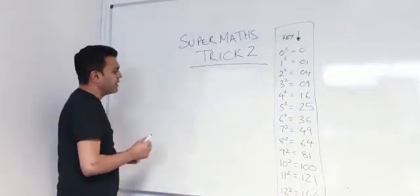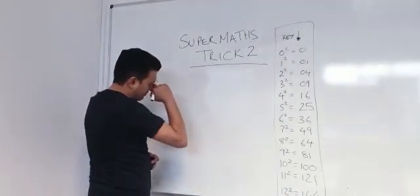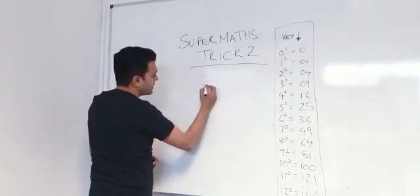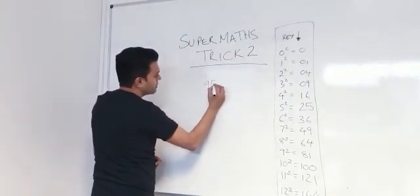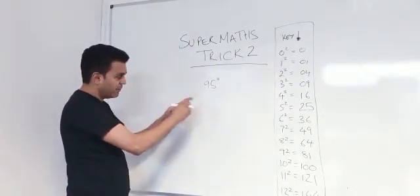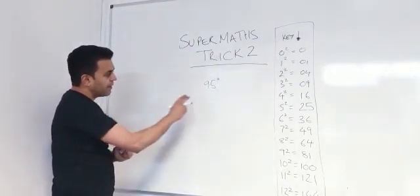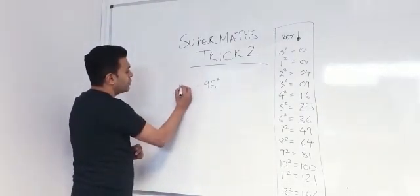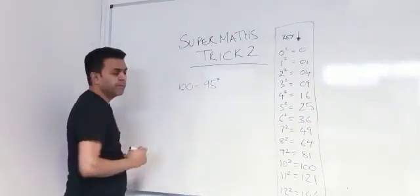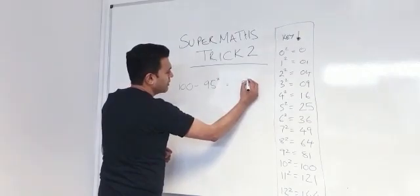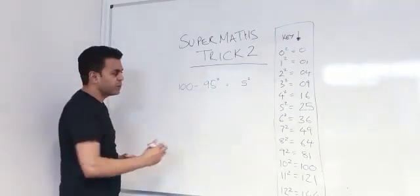Now if you have a number like 95 squared - I showed you a different way there, I'm going to show you a different way with this one. How close is 95 to 100? That's 5. What's 5 squared? 25.